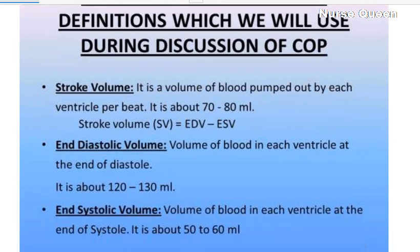Stroke volume is the amount of blood pumped out by each ventricle per beat — about 70 to 80 ml. Stroke volume equals end diastolic volume minus end systolic volume. End diastolic volume is the volume of blood in each ventricle at the end of diastole, which is the relaxation phase of the heart.